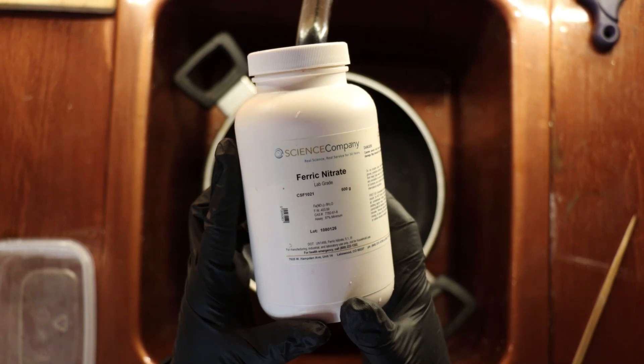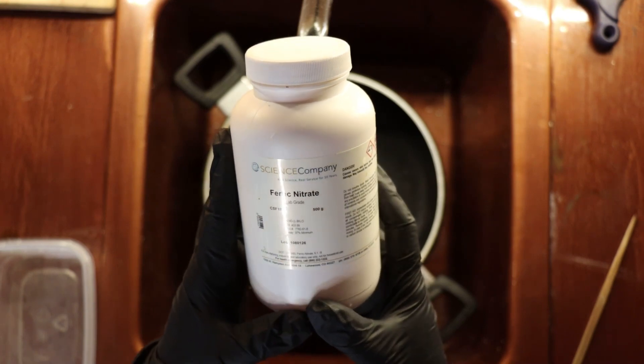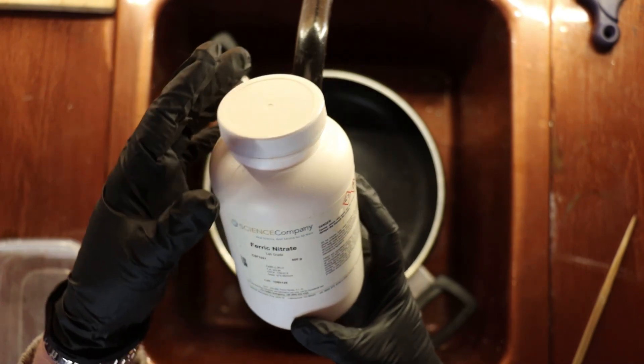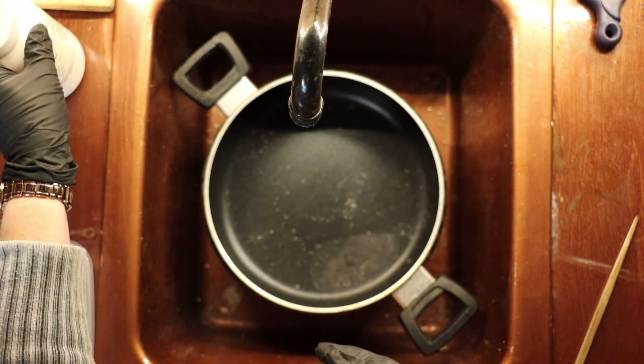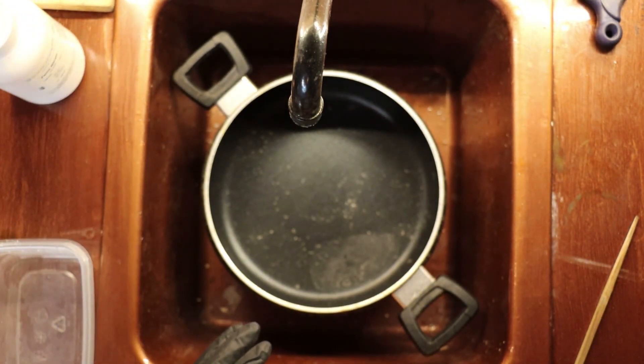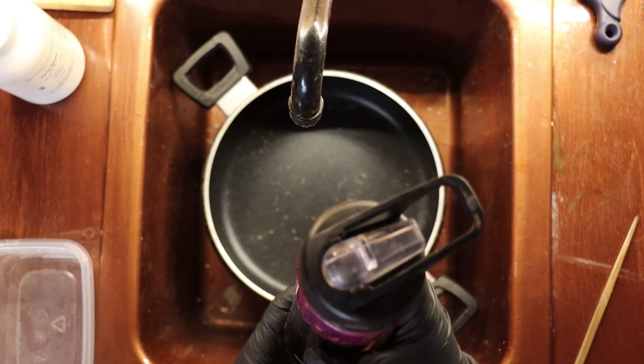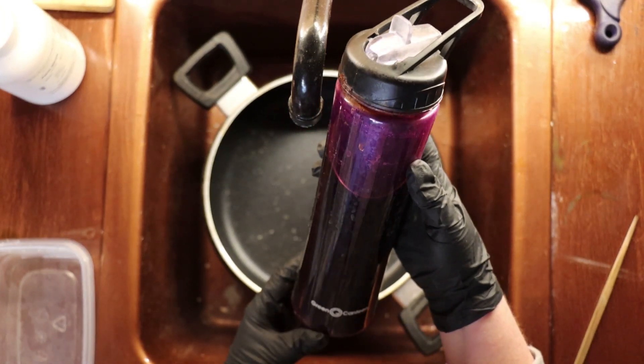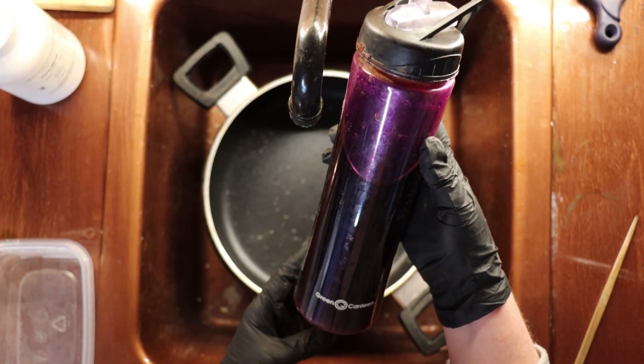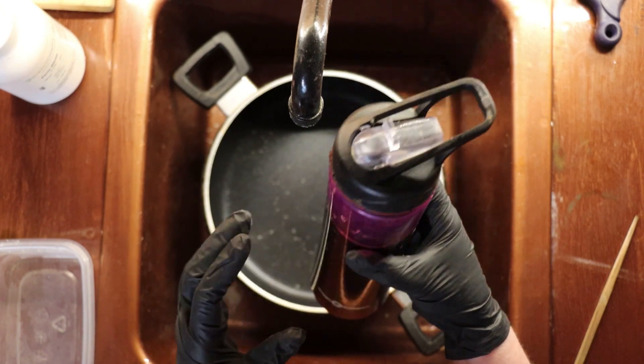Ferric nitrate will etch sterling silver but not copper. For copper, you want to use ferric chloride. So I've mixed some up already and I keep it in a plastic container.